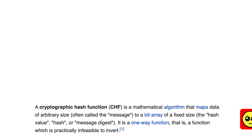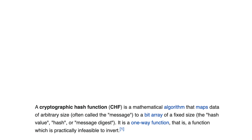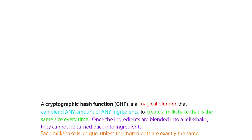So getting into what hashing is — if we look at the Wikipedia definition, it gets really complicated really fast and it's hard to wrap your mind around what it's trying to say. Because of this, I came up with an easy-to-understand, relatable definition that explains it pretty well.